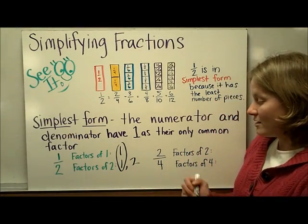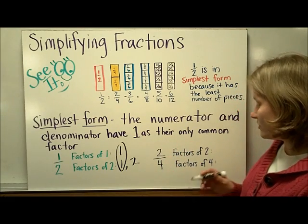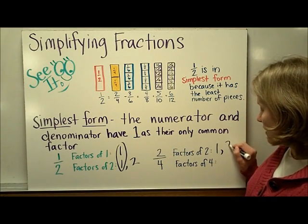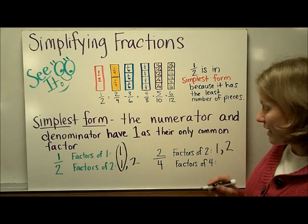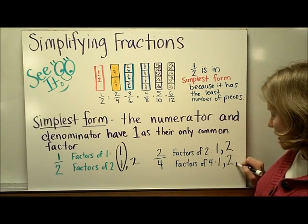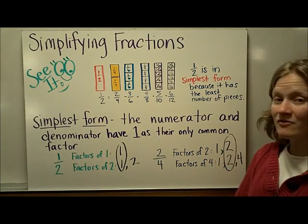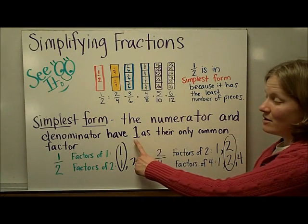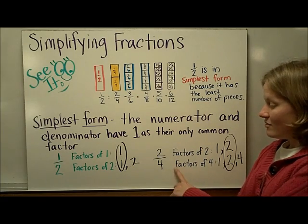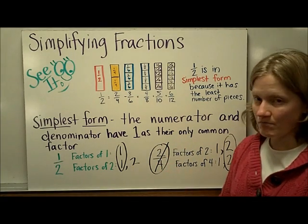On the other hand, let's show why 2 fourths is not in simplest form. The factors of 2 are 1 and 2, but the factors of 4 are 1, 2, and 4. And since they share a common factor that's bigger than 1, this fraction is not in simplest form.